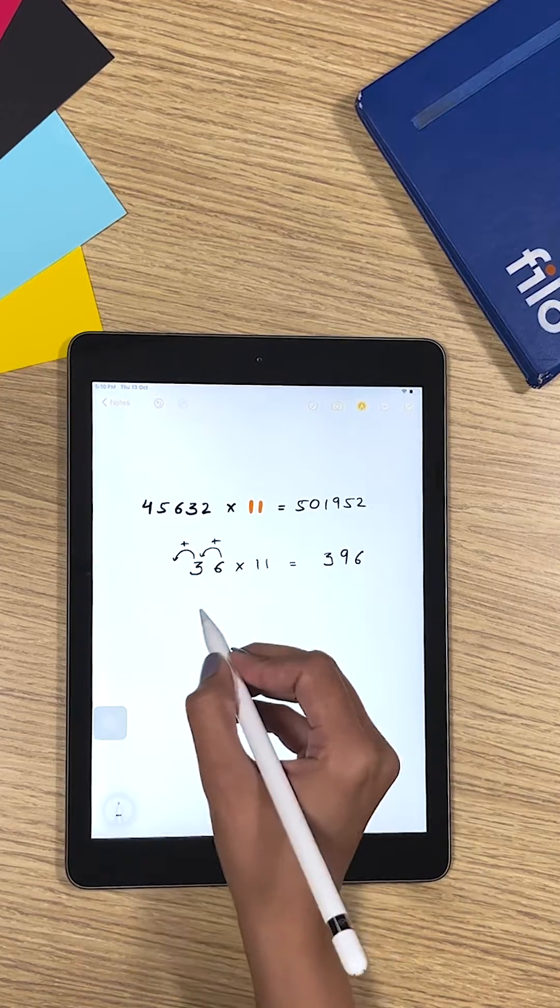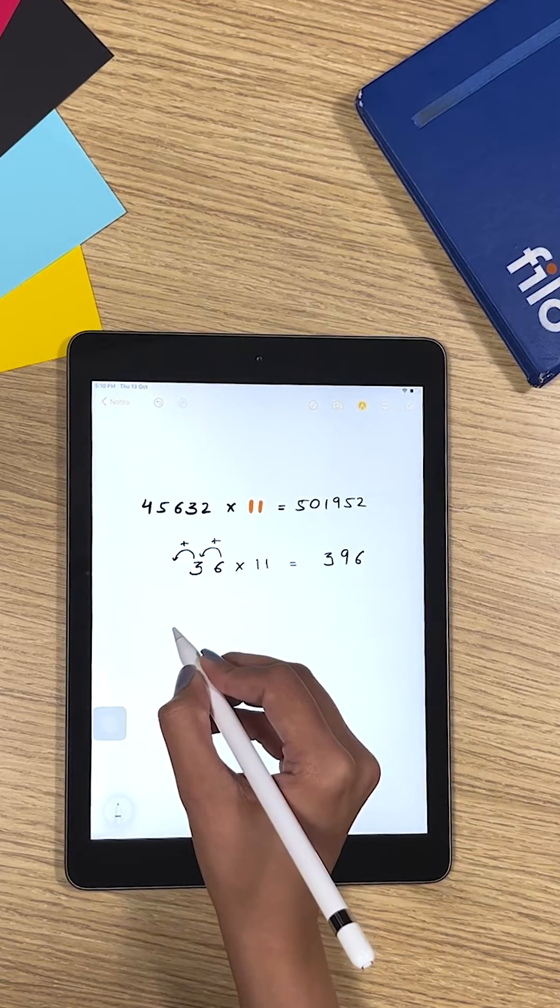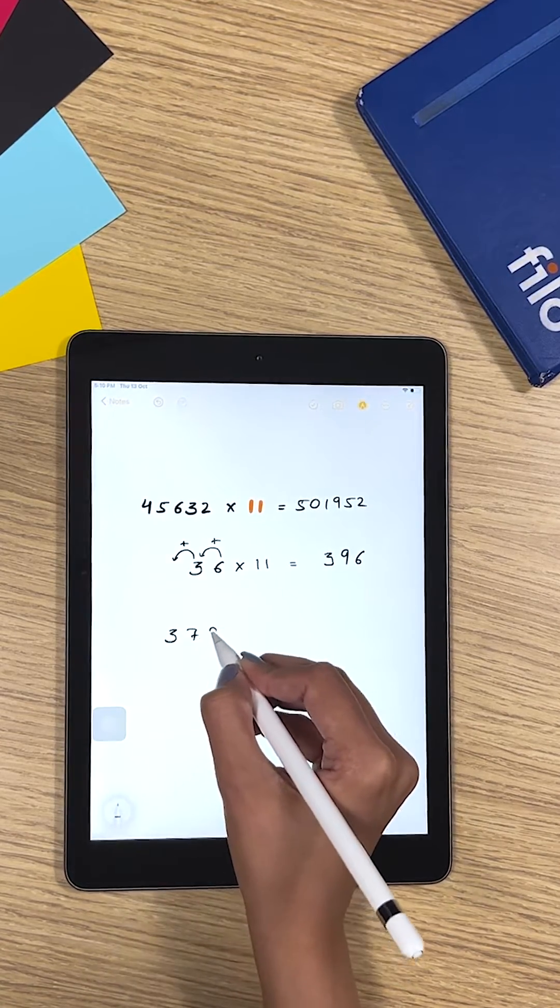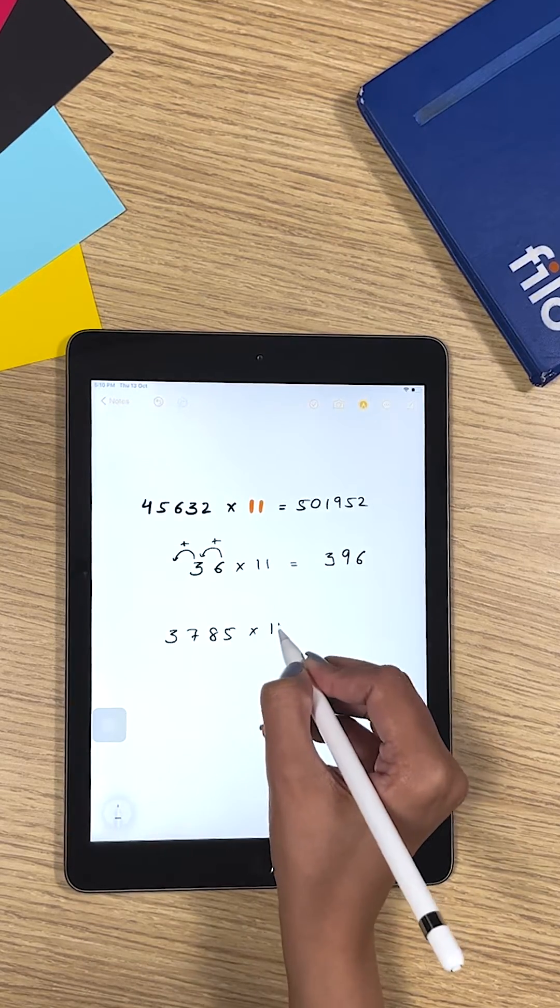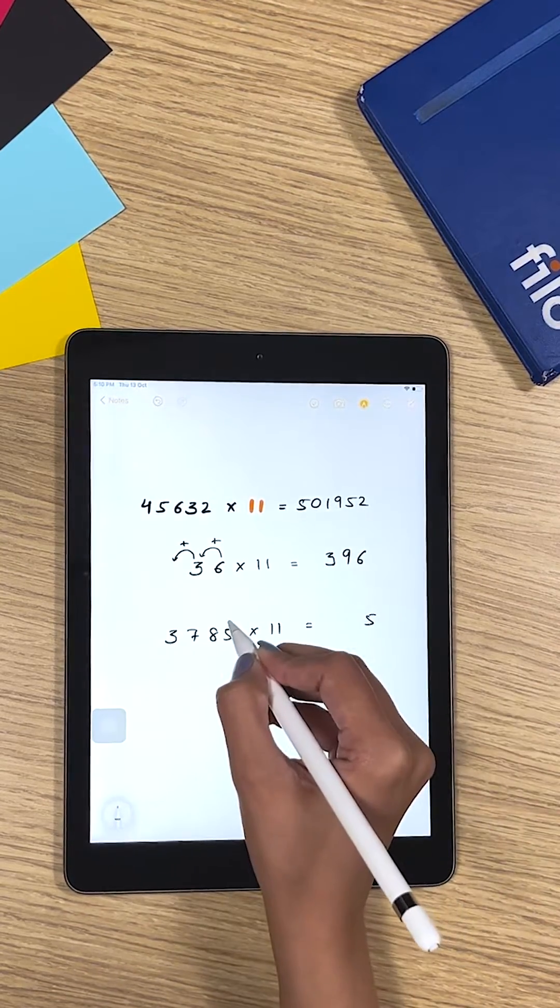Now you tried it with a much more complex problem, so you have 3785 times 11. So what you do: you copy the last digit as it is, you add it to the next.